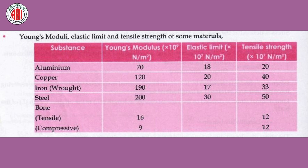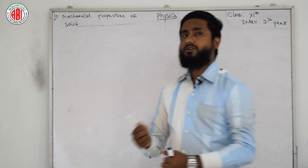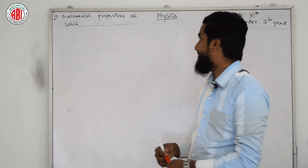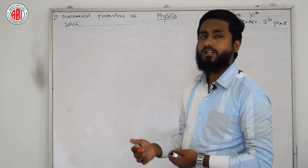In competitive examinations, questions may ask for values like the elastic limit of iron — for example, 17 × 10⁷ N/m² — given as multiple choice options. This table is important; write it down and try to make questions and answers from it yourself.